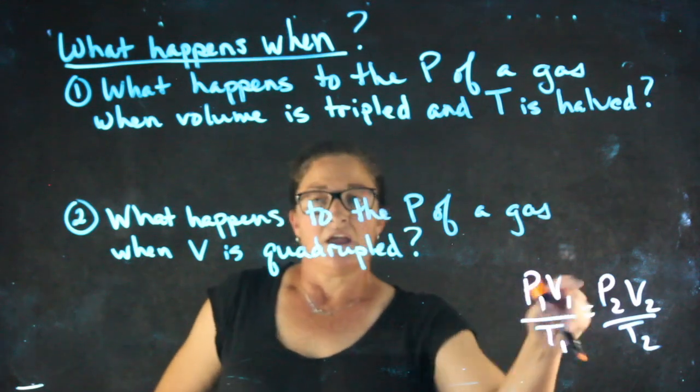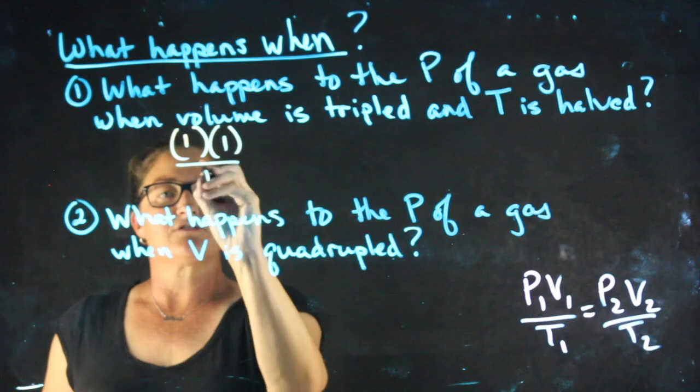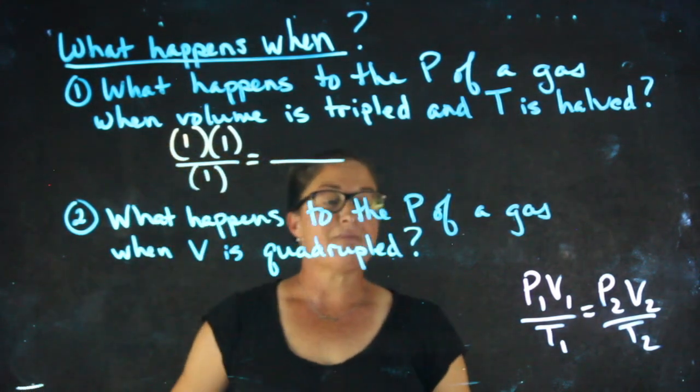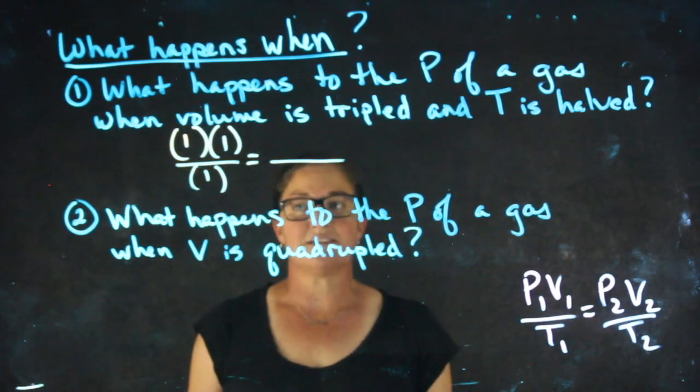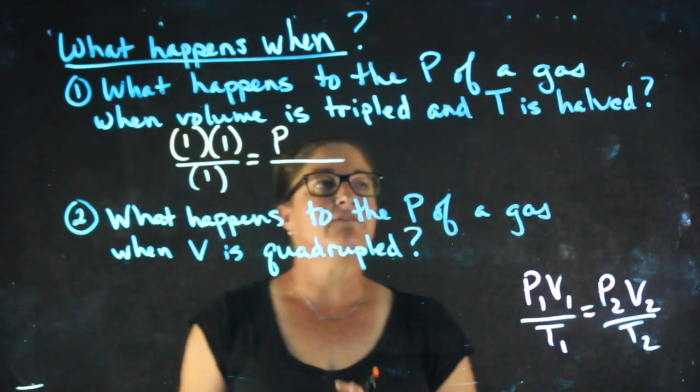The way we approach it is we pretend that our initial values are all one, because it doesn't matter what they are, it matters what our new values are relative to that. So I want to know what happens to the pressure, so I'm going to be solving for P.